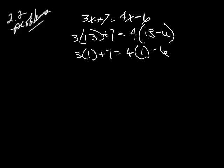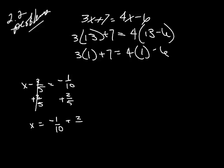9 through 28, you're just solving for the equation. So, let's look at number 20. x minus 2 fifths equals negative 1 over 10. So, we try to get the x by itself. So, I add 2 fifths to both sides. And that goes away.